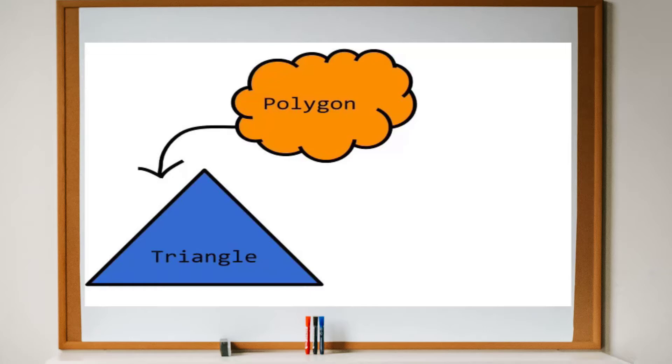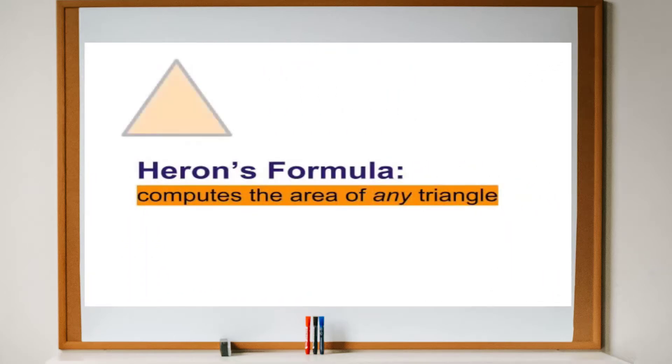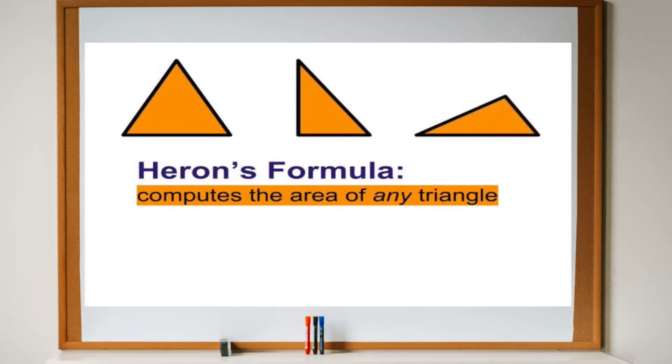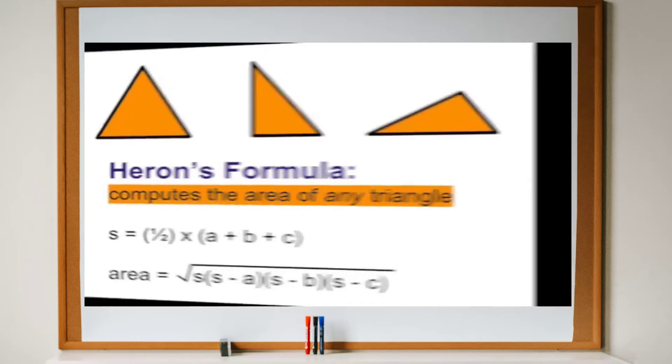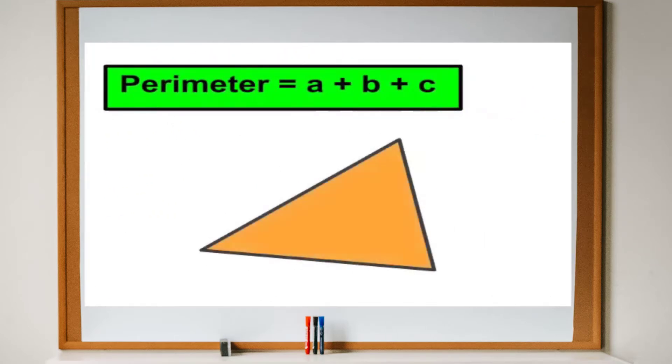We can find the area of any triangle by using Heron's formula. Let s equal one-half times each of the side lengths of the triangle. Then, we can compute the area as the square root of s times s minus side length a, s minus side length b, and s minus side length c. To get the perimeter, we simply add up the side lengths.